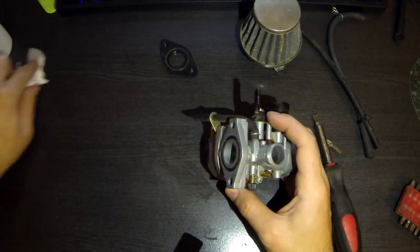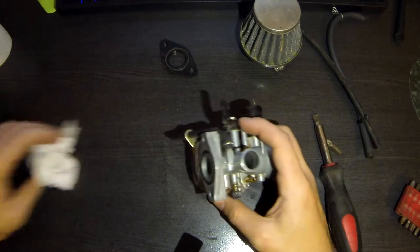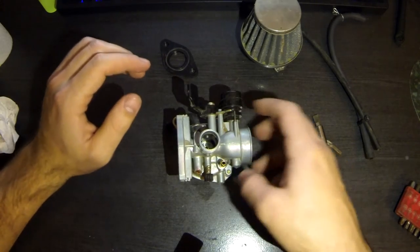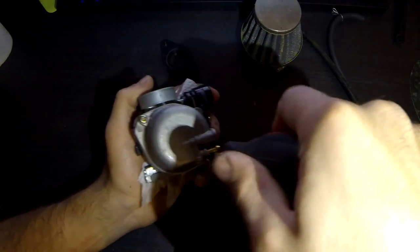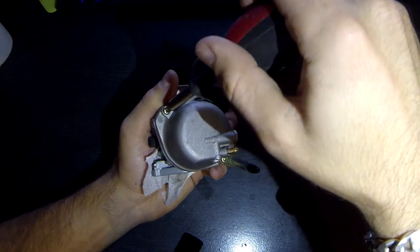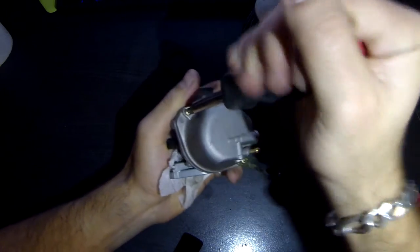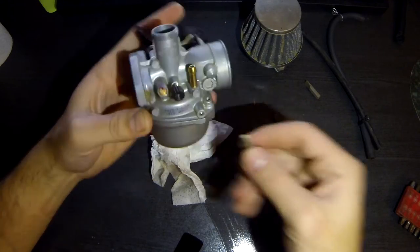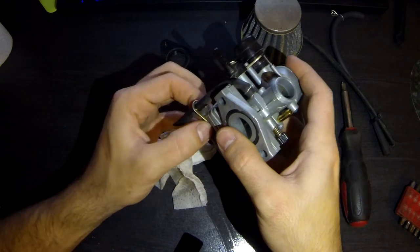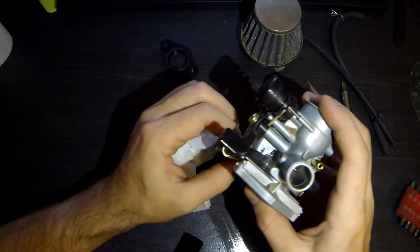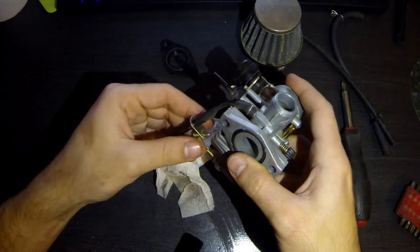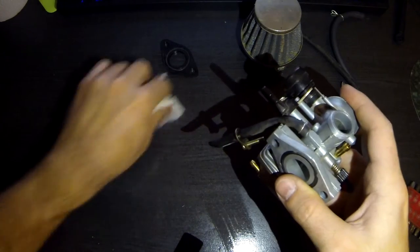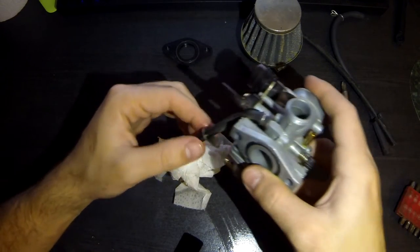So be ready guys to get dirty when you're cleaning out a carburetor because it's dirty. Now we have two screws on the bottom which we're going to take out gently. I like to unscrew them simultaneously. There's one, now for the other one. This one holds this little hose in place. Be sure to have around some paper napkins, anything to absorb fuel that might come out of the carburetor.